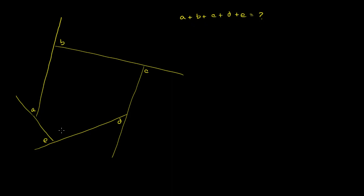Let's write the interior angles. We've already used up to letter E, so let's call this interior angle F, this one G, this one H, this one I, and this one J. So the sum of these particular exterior angles: A is the same thing as 180 minus G, because A and G are supplementary. So A is 180 minus G.